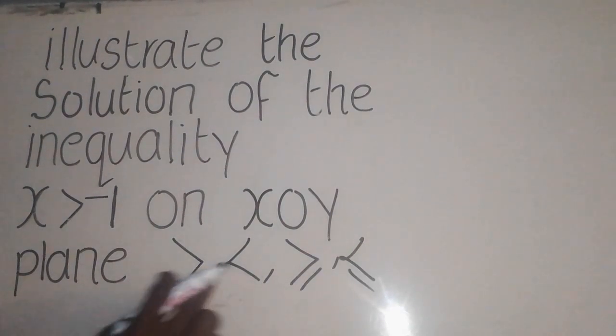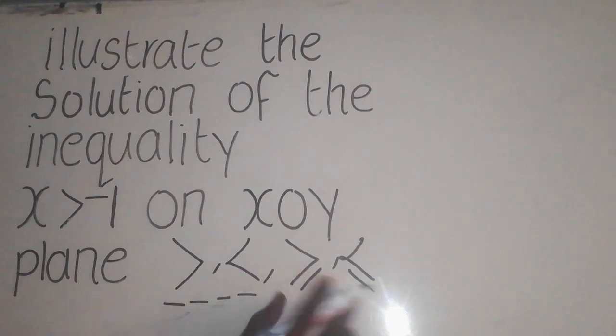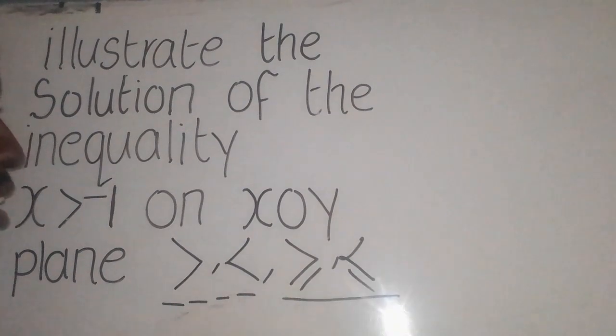When we are given these symbols (greater than or less than), we are supposed to use a dotted line. When we are given these symbols (greater than or equal to or less than or equal to), we are supposed to use a solid line.